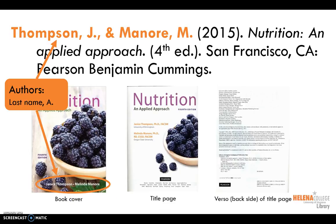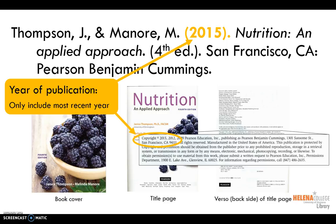The first part of a citation is the author's last name, followed by their first and sometimes middle initials. The last names should match your in-text citation, and refer to the cover of the book to find the first and middle initials. Next is the year of publication in parentheses, which will again be the same as your in-text citation.